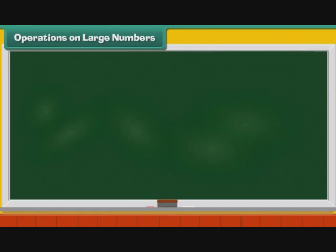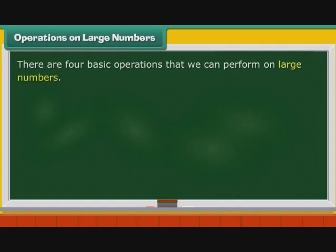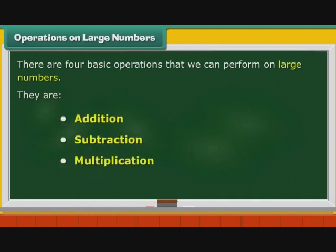Operations on large numbers. There are four basic operations that we can perform on large numbers. They are Addition, Subtraction, Multiplication, and Division. Let us look at them one by one in detail.